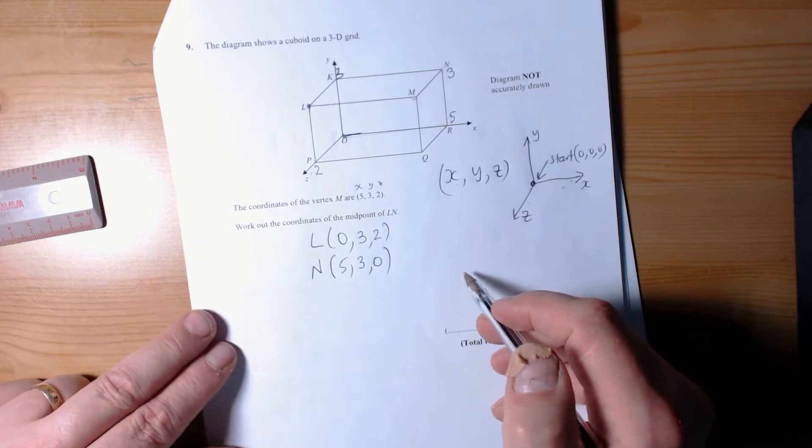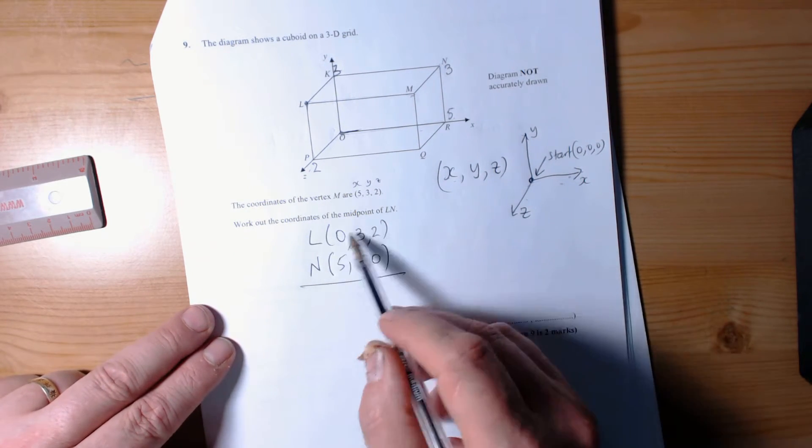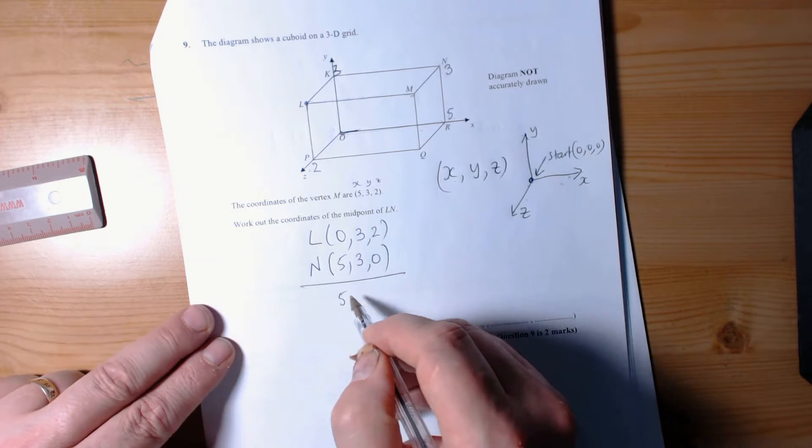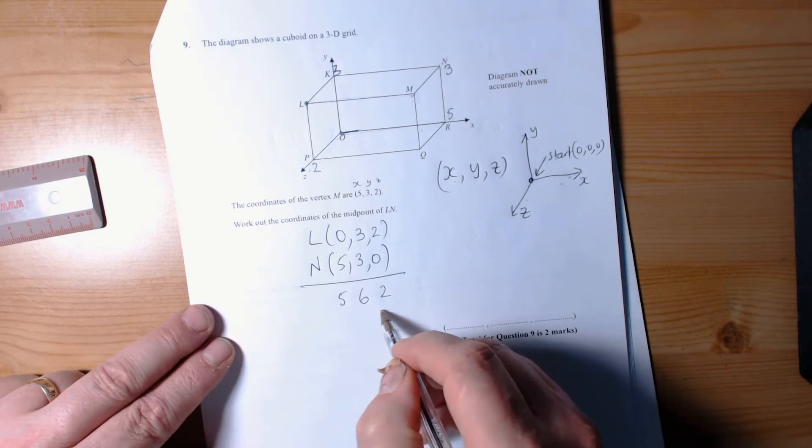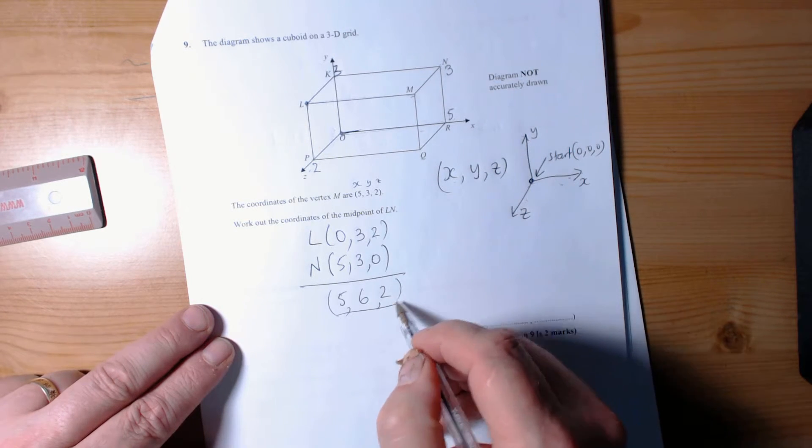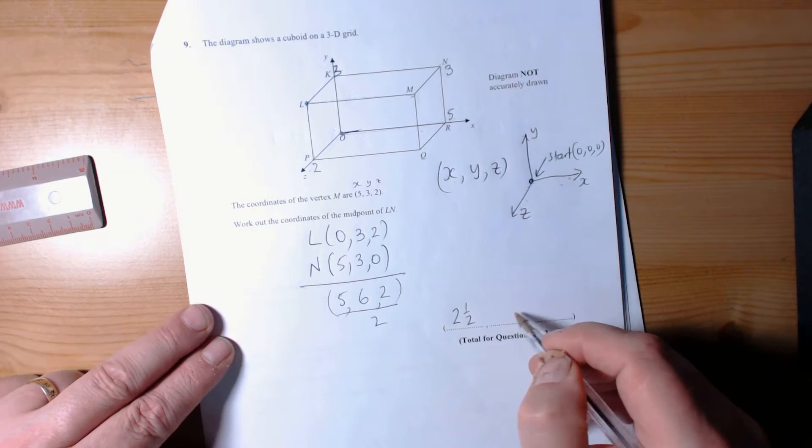The midpoint of coordinates is like halving two numbers. So we have the coordinates (5,3,0) and (0,3,2), and we can halve that, so the answer will be (2.5, 3, 1). That's one method. Another method is you could connect L and N and use your logic.